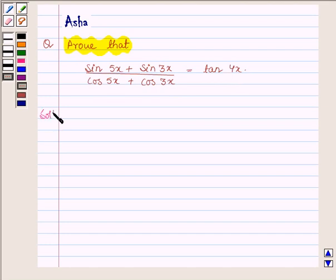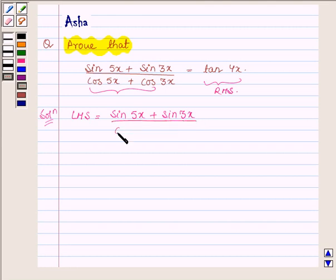Let us begin with the solution and we shall start with the left hand side and show that it is equal to the right hand side. Now the left hand side is sin 5x plus sin 3x upon cos 5x plus cos 3x. First let us learn some simple formulas with the help of which we will solve it.